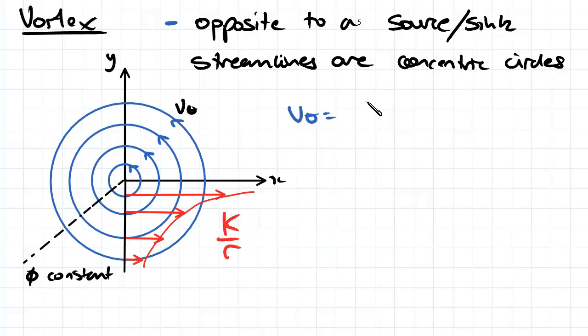So that is that V theta is equal to K over R, where K is some constant. So you can see we've got a bit of a hyperbola going on here.